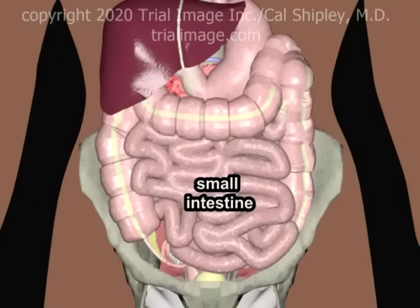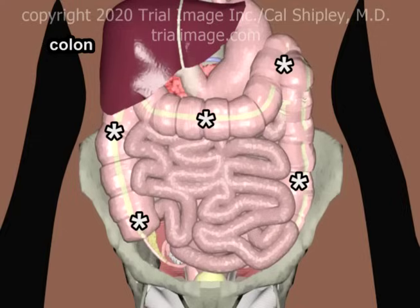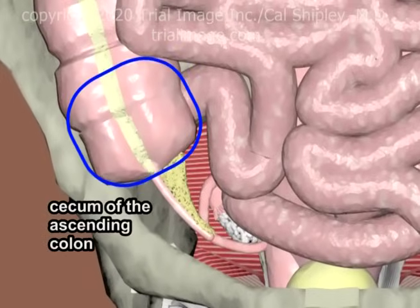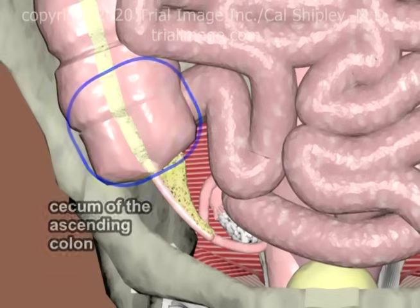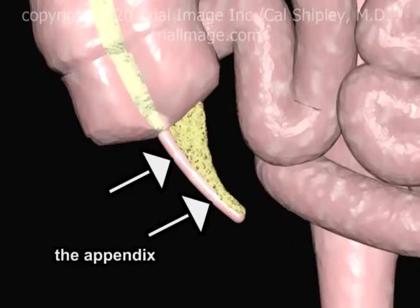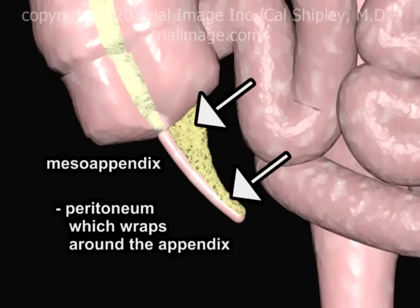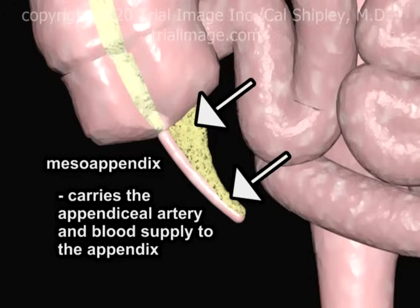The midsection of the abdomen is largely occupied by the small intestine. Running mostly peripherally to the small intestine is the colon. The cecum is a slight outpouching located at the start of the ascending colon on the right side of the abdomen. Attached to the cecum is the appendix. The mesoappendix is a fold of peritoneum which wraps around the appendix and carries the appendiceal artery and blood supply.